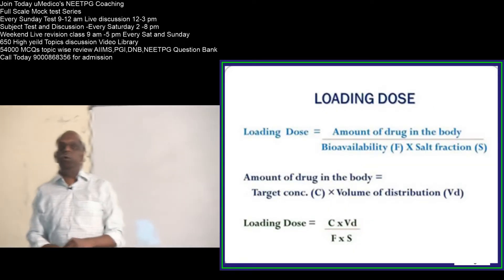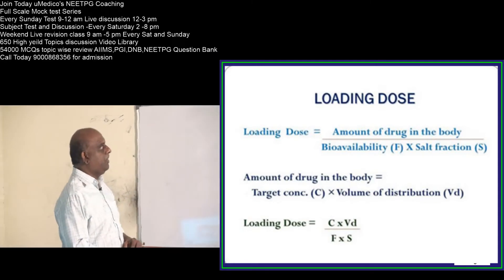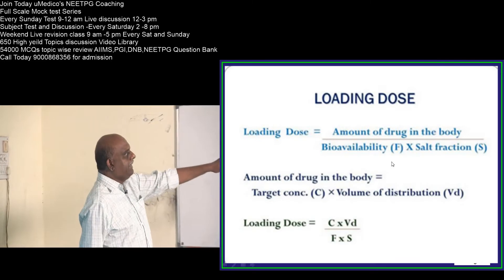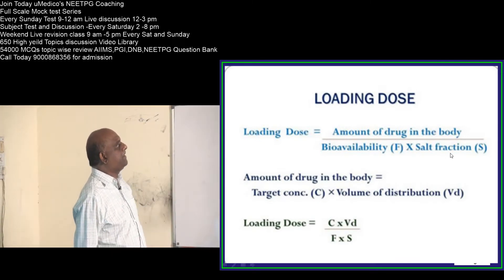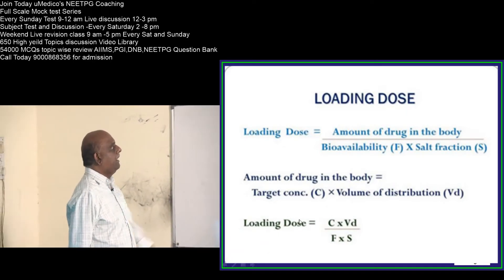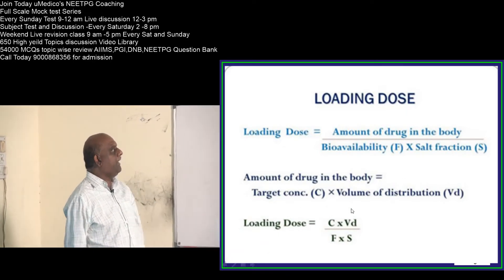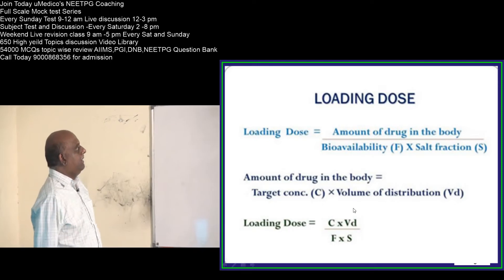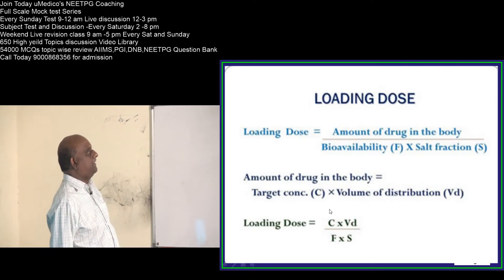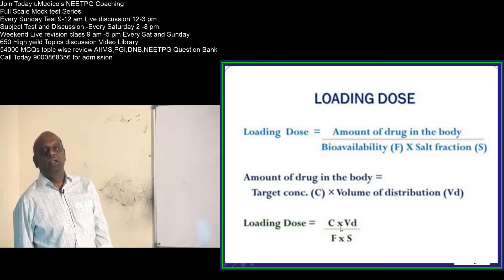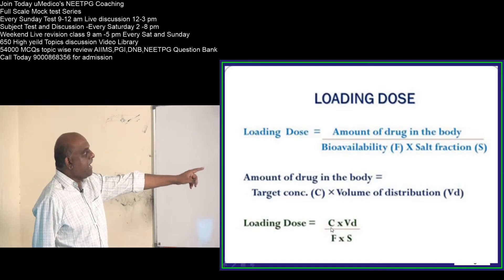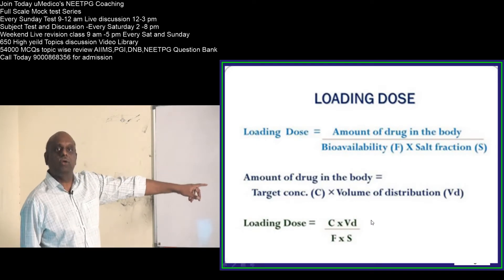The loading dose equals the amount of the drug in the body divided by bioavailability into the salt fraction. Another way: the amount of the drug in the body is calculated by volume of distribution multiplied by the target concentration. So the loading dose formula has target concentration and volume of distribution in the numerator.